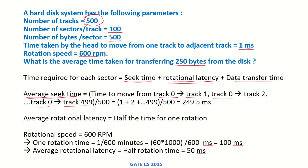Starting from 0, the outermost track is track 499. Since the head takes 1 millisecond to move between adjacent tracks, the time from track 0 to track 1 is 1ms, to track 2 is 2ms, and to track 499 is 499ms. We add all these values and divide by the total number of tracks, which is 500.